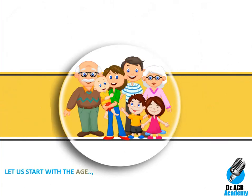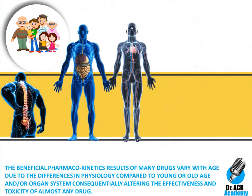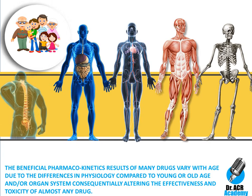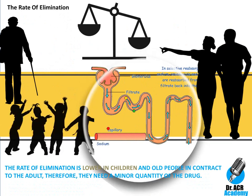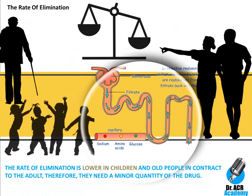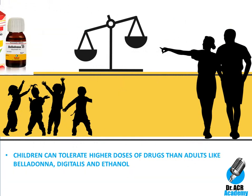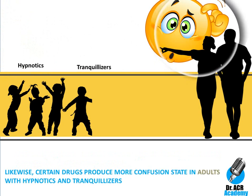Let us start with age. The pharmacokinetic results of many drugs vary with age due to differences in physiology compared to young or old age and organ systems, consequently altering the effectiveness and toxicity of almost any drug. The rate of elimination is lower in children and old people compared to adults; therefore, they need a minor quantity of the drug. Children can tolerate higher doses of drugs like belladonna, digitalis and ethanol.